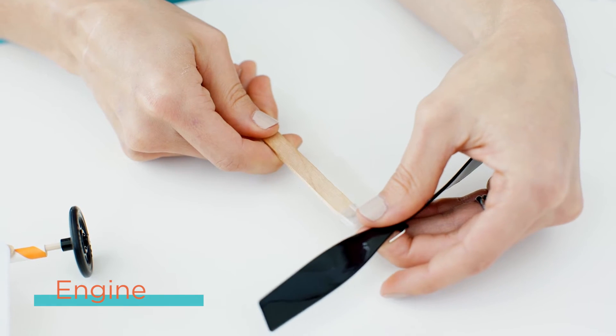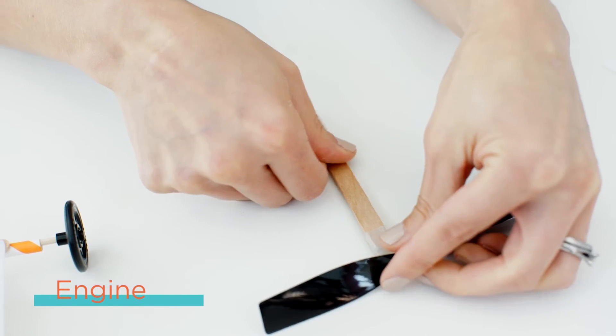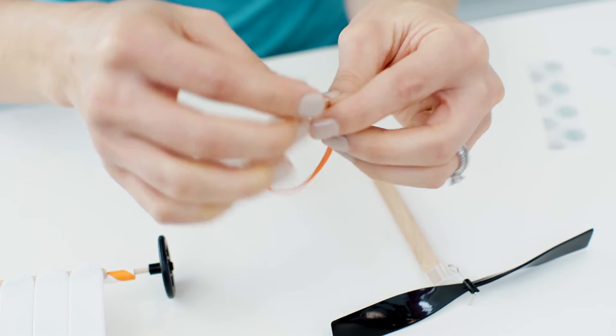Take your propeller and slide it onto your wood stick. Then slide your rubber band onto the paper clip.